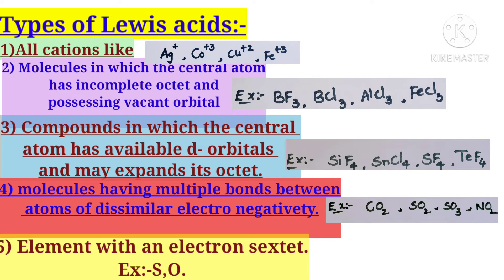For example, BF3, BCl3, AlCl3, and FeCl3. In BF3 and BCl3, the central atoms boron, aluminum, and iron are electron deficient. Why do we call them electron deficient? Because they contain an incomplete octet. Octet means eight electrons in the outer shell. In these atoms, an incomplete octet is present and they also possess a vacant orbital. So these are Lewis acids.